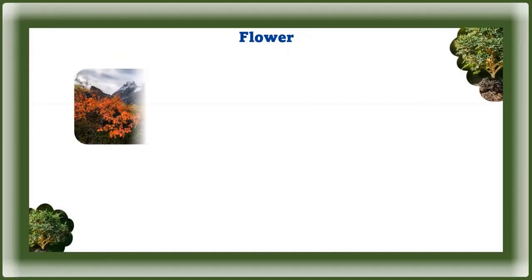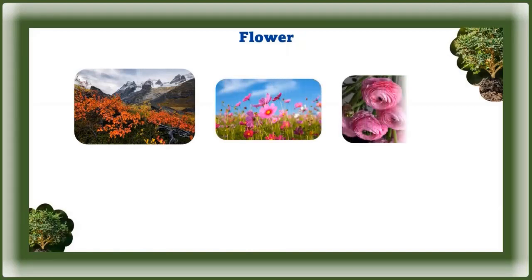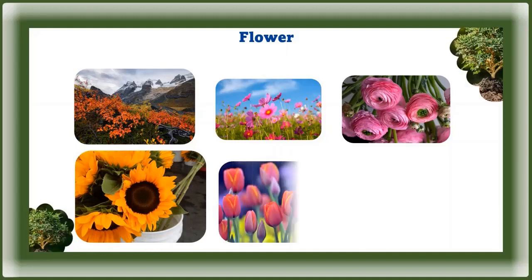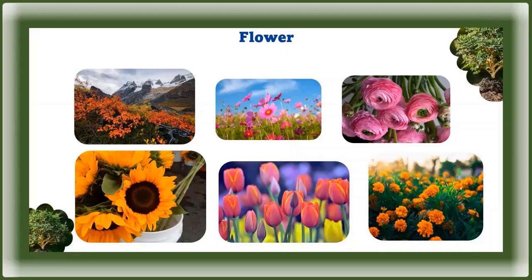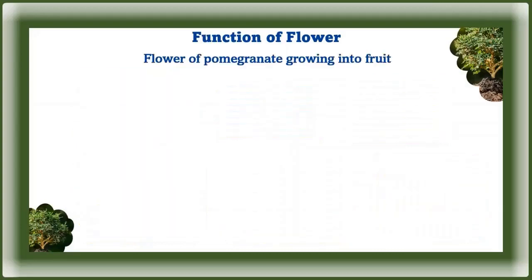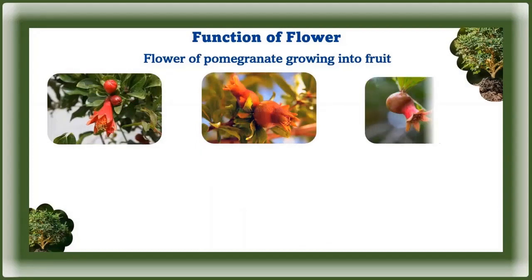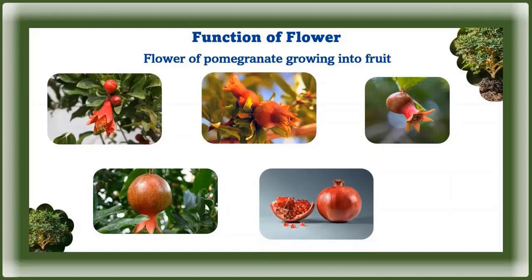Now, the flower — the most beautiful part of a plant. We see flowers like rose, jasmine, and lotus. Flowers are of many colors, shapes, and sizes, and many have a pleasant fragrance. A flower blooms from a bud. The main function of a flower is to produce seeds — the flower grows into fruit and helps the plant to reproduce.